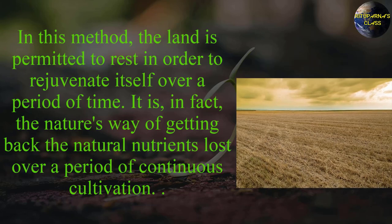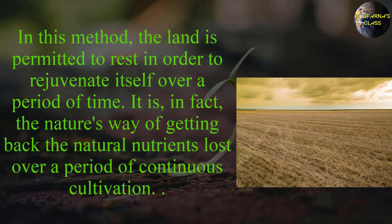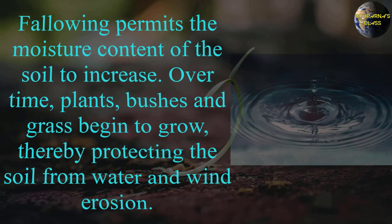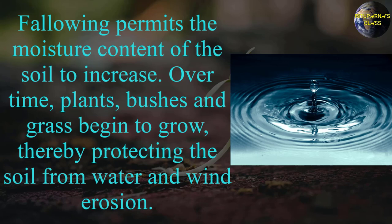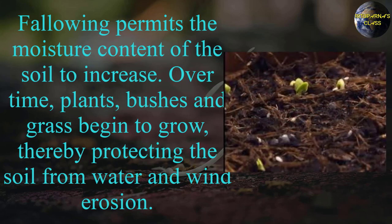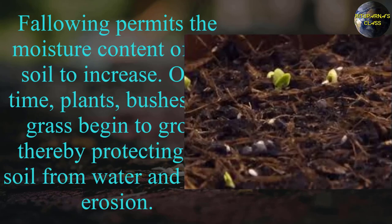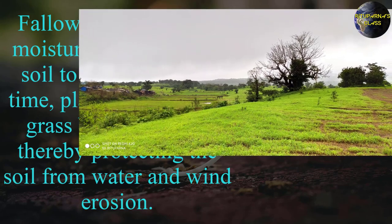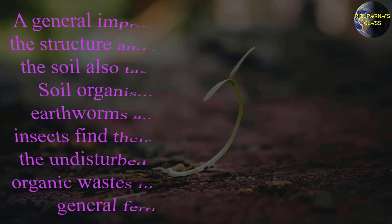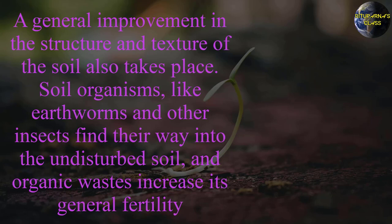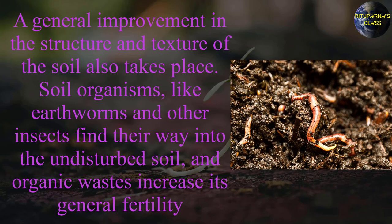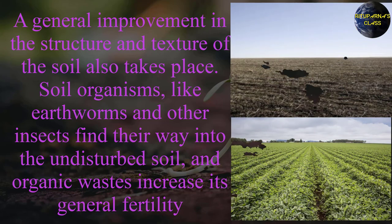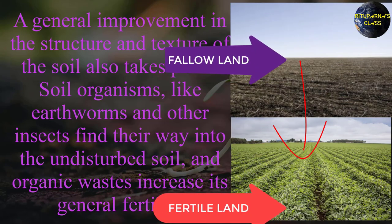It is nature's way of getting back the natural nutrients lost over a period of continuous cultivation. Fallowing permits the moisture content of the soil to increase. Over time, plants and grass begin to grow, thereby protecting the soil from water and wind erosion. A general improvement in the structure and texture of the soil also takes place. Soil organisms like earthworms and other insects find their way into the undisturbed soil, and organic wastes increase its general fertility.